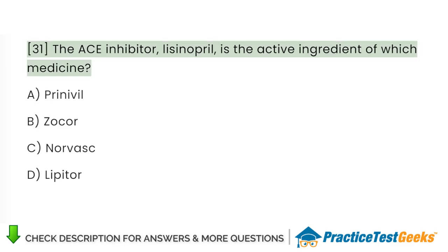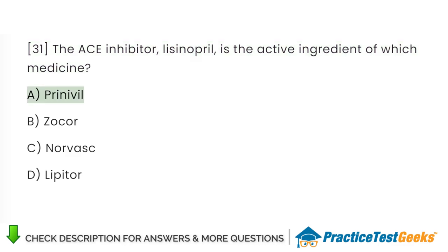The ACE inhibitor lisinopril is the active ingredient of which medicine? A. Prinavol. B. Zocor. C. Norvasc. D. Lipitor.